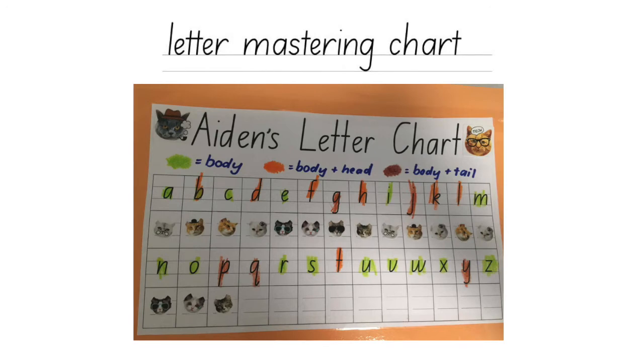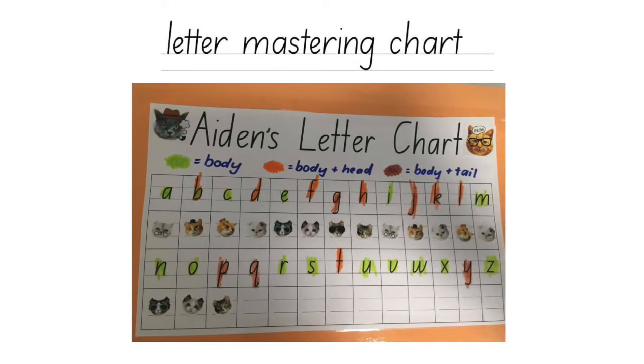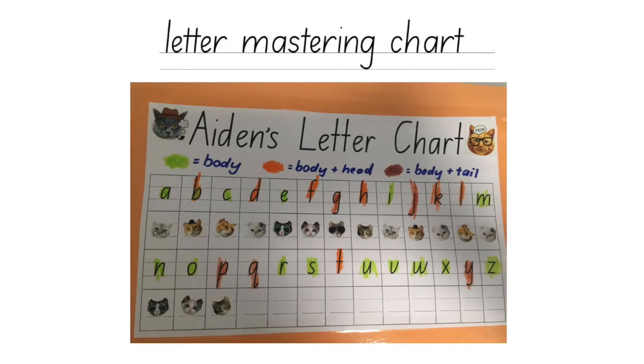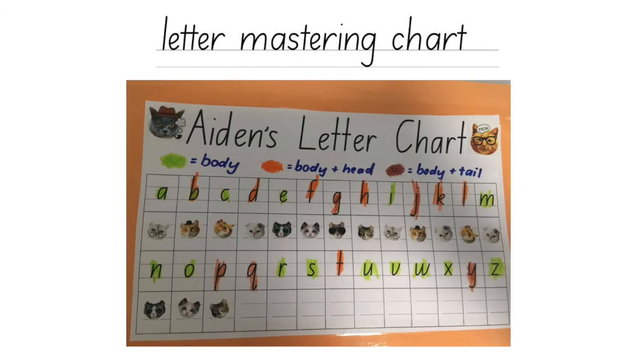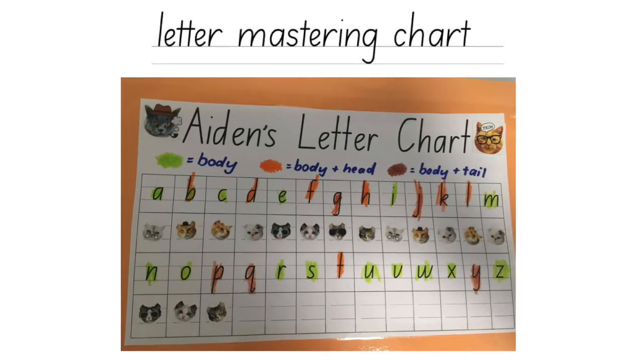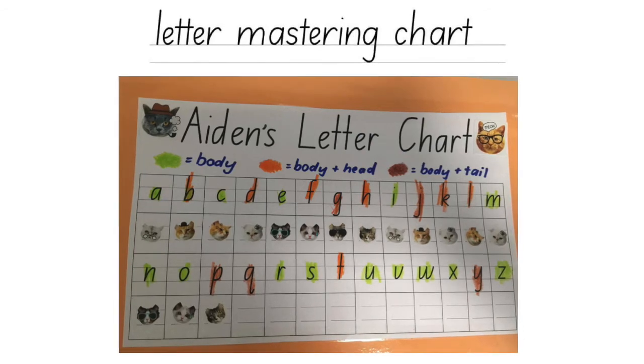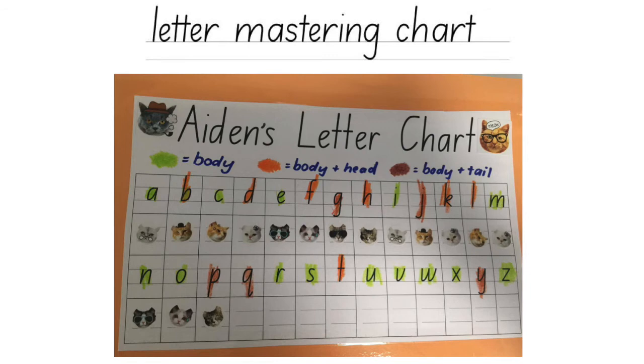Finally, a fun way to wrap up the cat writing experience is to make a letter mastering chart. This involves having a box for each letter and using a sticker system. Once each child shows 10 perfectly formed versions of each letter, they get a sticker in that box.